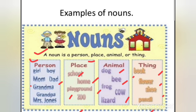I believe that you have learned this well. One more thing I want to say: you need to know what a noun is — the names of persons, places, animals, or things are what we call nouns.